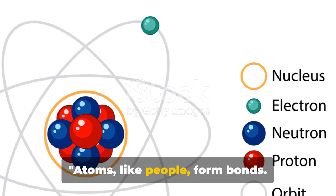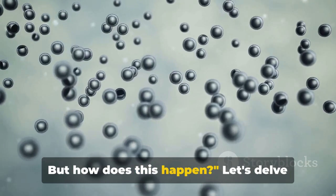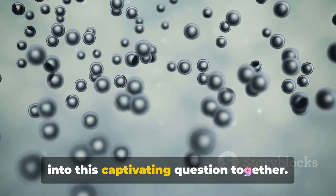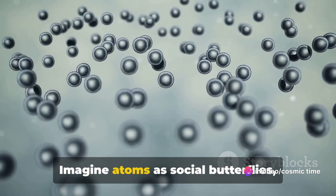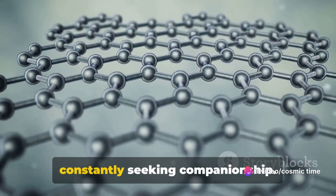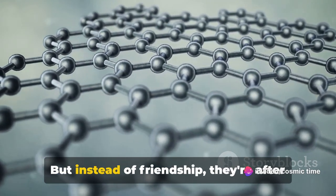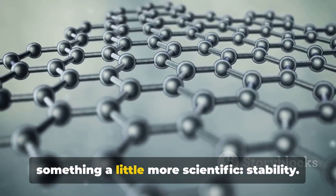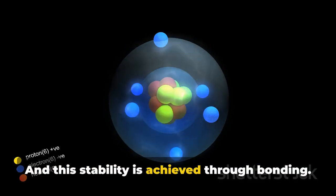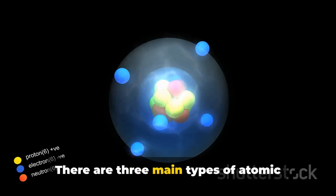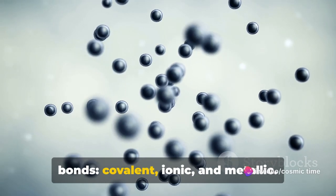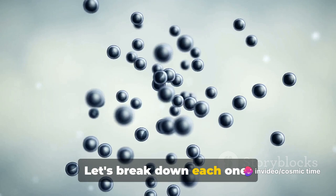Atoms, like people, form bonds. But how does this happen? Let's delve into this captivating question together. Imagine atoms as social butterflies, constantly seeking companionship. But instead of friendship, they're after something a little more scientific: stability. And this stability is achieved through bonding. There are three main types of atomic bonds: covalent, ionic, and metallic.